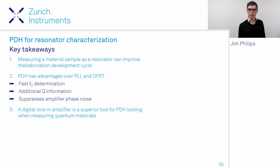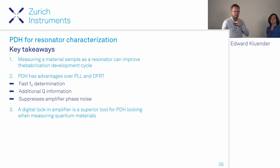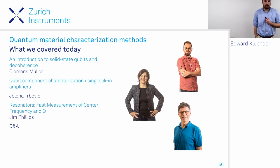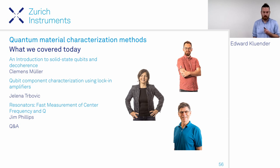In summary: a proxy resonator measurement with a material sample speeds the development cycle. PDH is a good method—it measures resonance frequency fluctuations fast at high bandwidth, measures Q fluctuations over a frequency spectrum, and suppresses amplifier phase noise. A digital lock-in amplifier is advantageous for this measurement. Clemens covered solid state qubits and decoherence; Jelena covered lock-in methods for material characterization; Jim covered the PDH proxy resonator measurement.